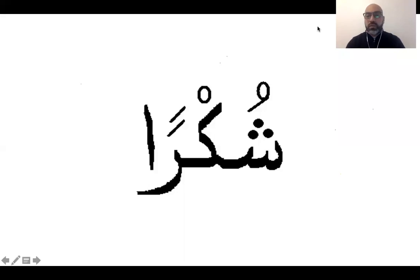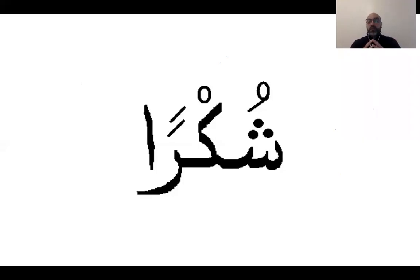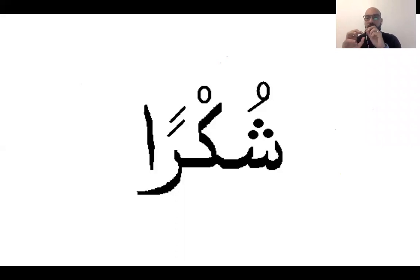Je vais voir si vous avez des questions. L'antigénicité croisée : le corps humain va développer des anticorps contre un germe qui possède des épitopes sur sa coque. Malheureusement, ces anticorps ne vont pas attaquer uniquement le germe, ils vont attaquer d'autres organes qui ont les mêmes épitopes. C'est donc une antigénicité croisée.